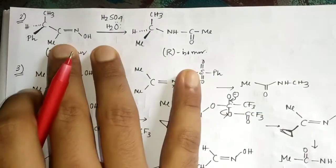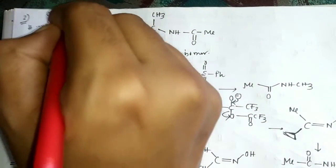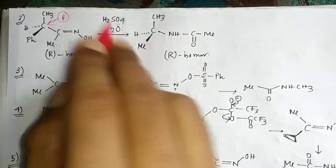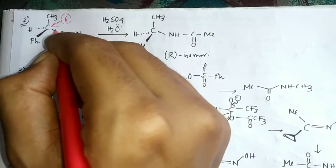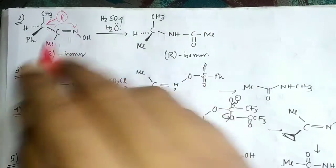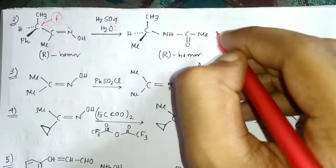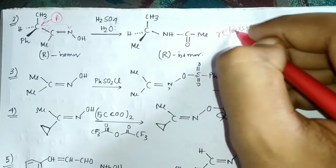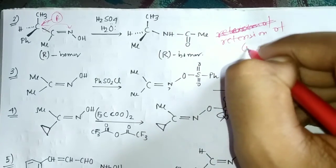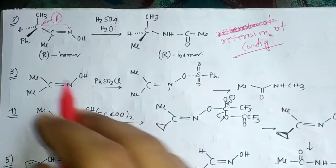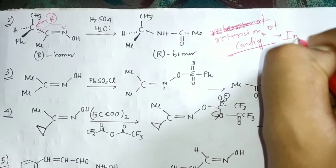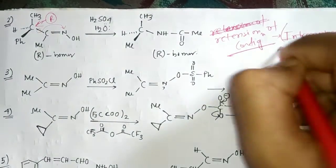Another example uses a chiral R-configured compound. Using H₂SO₄ and water, the anti group migrates. This reaction shows retention of configuration at the migrating carbon, which proves the reaction is intramolecular — not intermolecular.